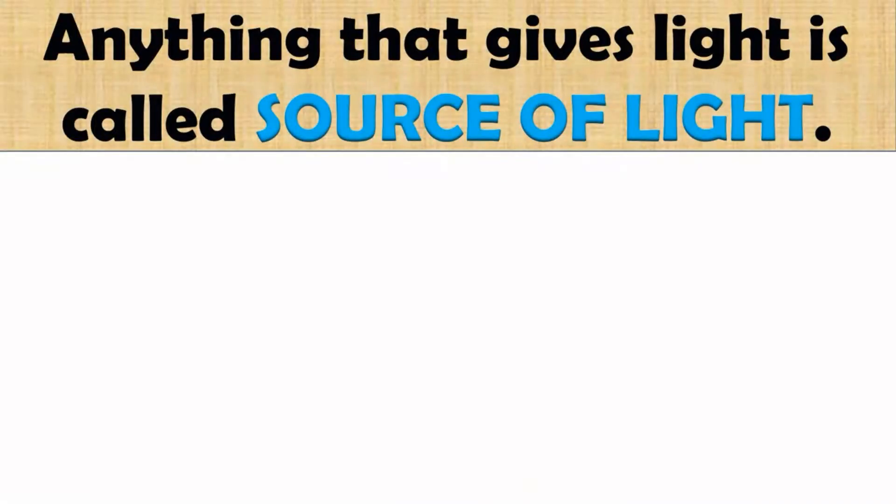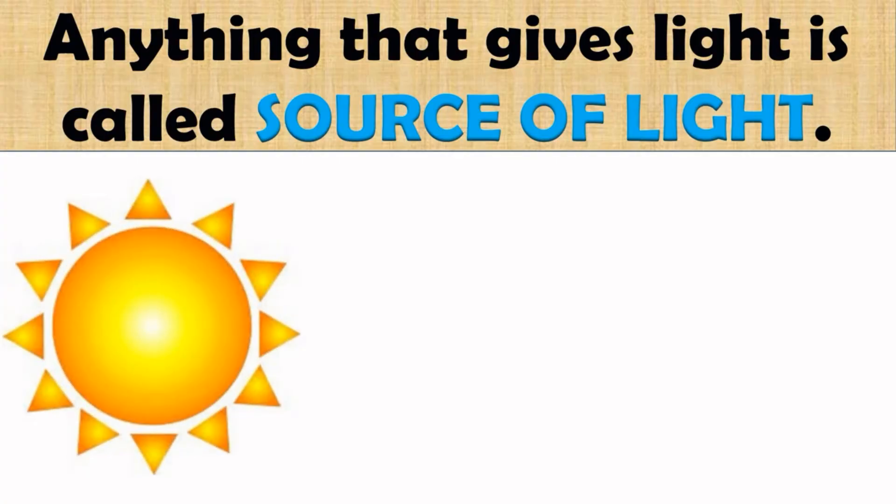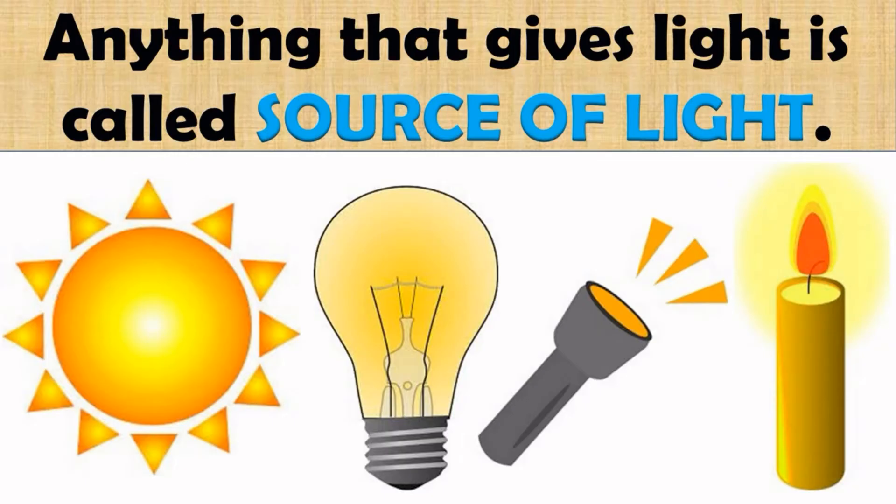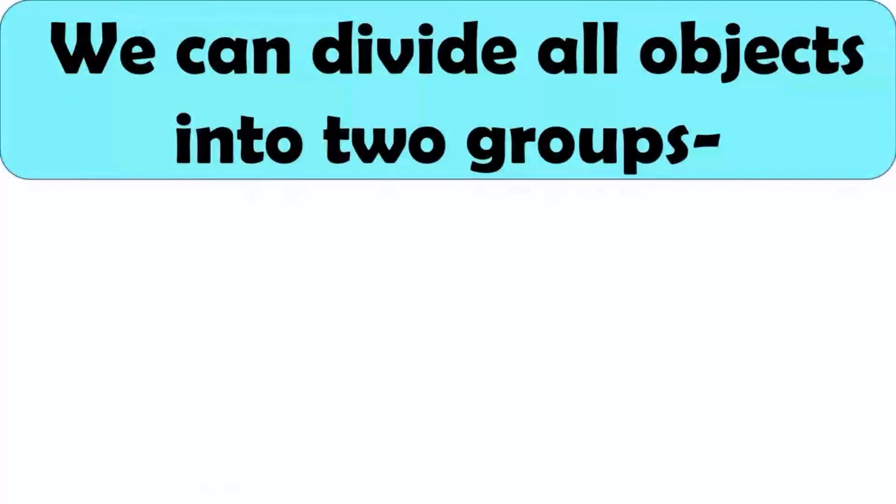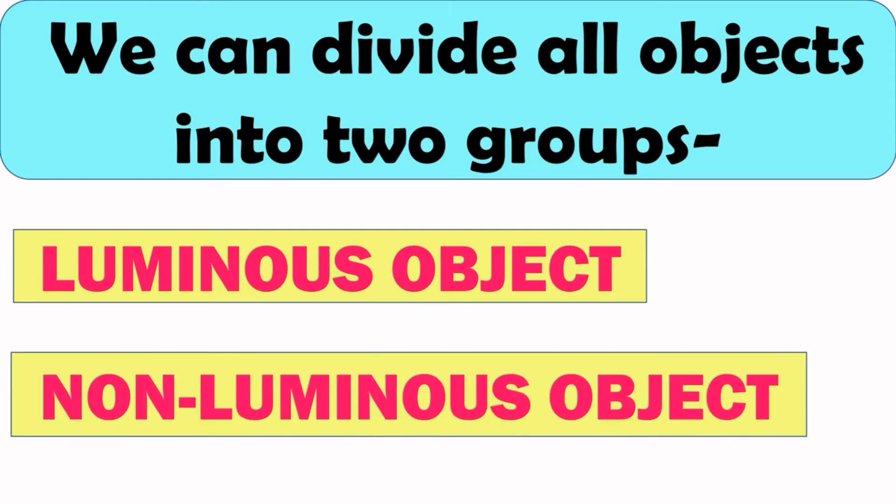Next, anything that gives light is called a source of light. Like sun is the main source of light on the earth. Other sources of light are bulb, torch, candle, lamps, etc. There are different kinds of objects in our surrounding and we divide objects into two groups and they are luminous object and non-luminous object.